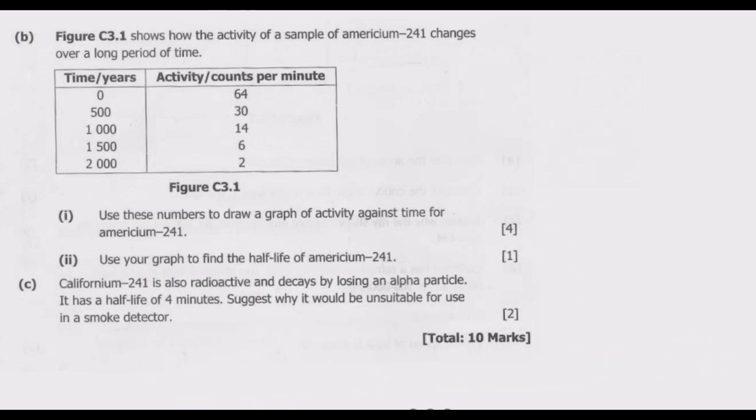Question (b)(i): Figure C3.1 shows how the activity of a sample of americium-241 changes over time. Use these numbers to draw a graph of activity against time. Activity is the y-axis, time is the x-axis. Then use your graph to find the half-life of americium-241. What's important is ensuring that when you plot these values, they are scaled equally so the graph comes out perfect.